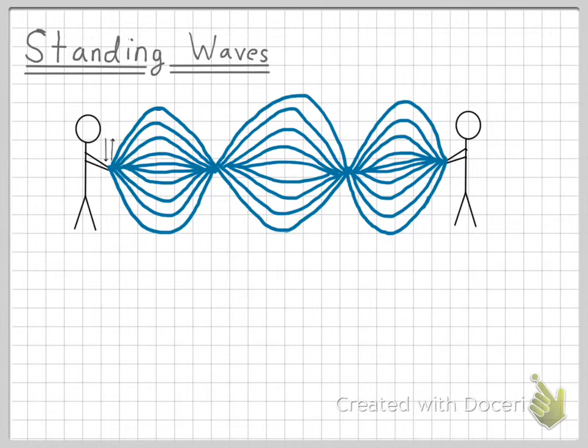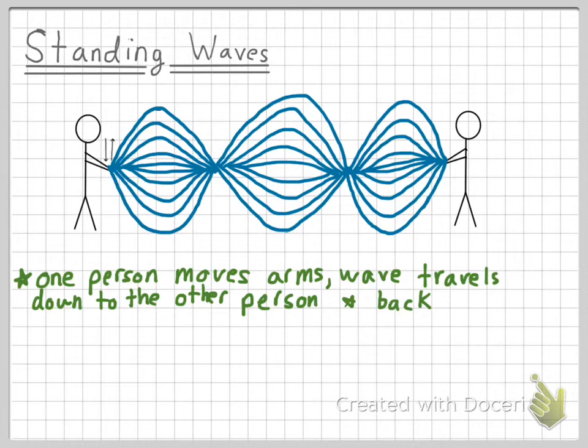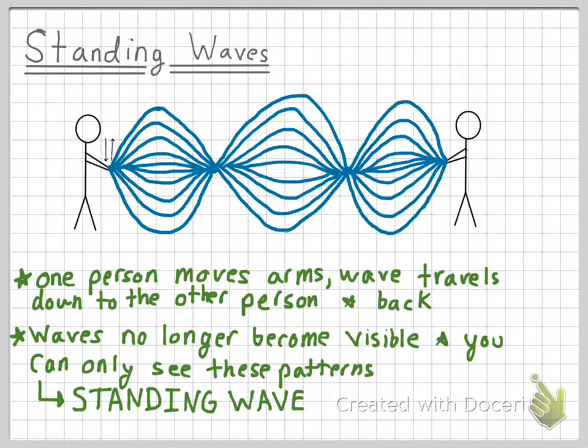So when the one person moved their arms up and down, the student creates a wave that travels from the original student down to the second student and is reflected back to the original moving student. When the waves create these kinds of patterns and you don't see any more chaotic moving spring, instead you tend to only see these patterns, that is when a standing wave is made. A standing wave is whenever you see these kinds of patterns or images.